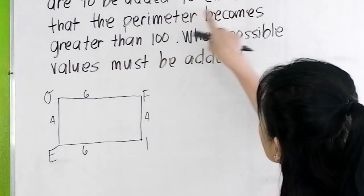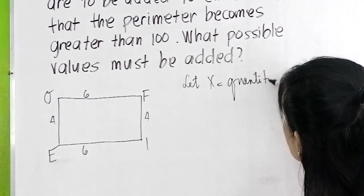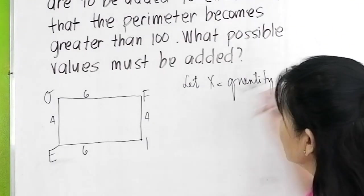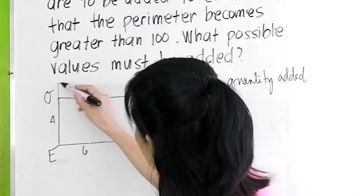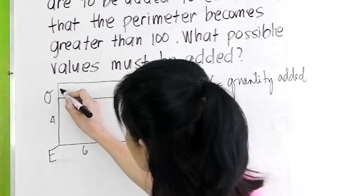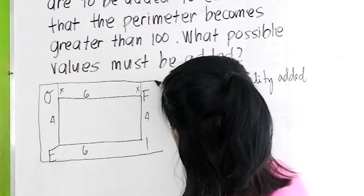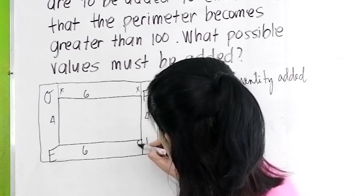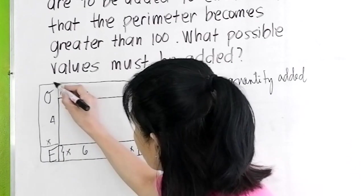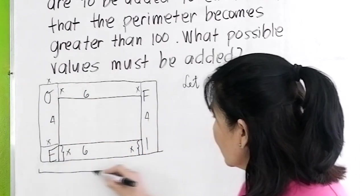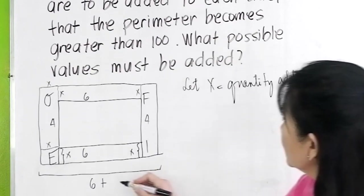Equal quantities are to be added to each side. We let x be the quantity added. So in other words, 6 becomes 6 plus x, so this one will become there. You add equal quantities, this is x, this is x. Then you also add equal quantities here and here. So this will be x, this will also be x, this will be x, this will be x, and this will be x. So this whole thing, this new side now becomes 6 plus 2x. Isn't it?